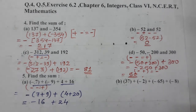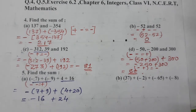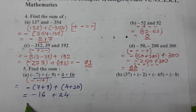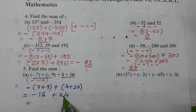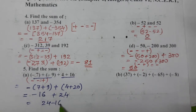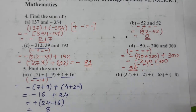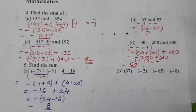Now again we have to subtract because one is plus and one is minus. Subtract kar dete hain aur sign will be of the bigger one. Plus bada hai, to 24 minus 16 — 24 minus 16 kitna ho gaya — 8. To answer aa gaya plus 8.